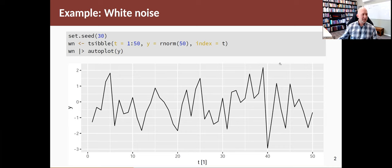In terms of statistics, it's actually just independent and identically distributed random values. Here's an example where we generate some white noise. I've set the seed to a specific number that just sets the random number generator on my computer to give the same numbers as it will on your computer.